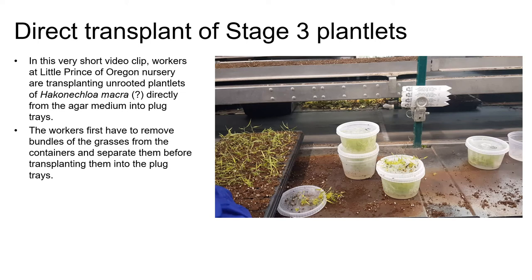Larger wholesale growers who have facilities where they can maintain young stage three plantlets under high levels of humidity and low light levels often choose to buy stage three plantlets, as opposed to rooted stage four plantlets, because they're much less expensive. It's really important, though, to have skilled workers who are able to work fast and accurately and to be able to manipulate the environment in order to make the cost savings worthwhile. The stage three plantlets are quite fragile and large losses can easily be suffered if they aren't handled correctly.